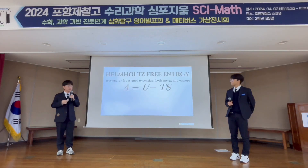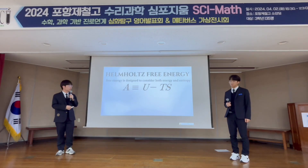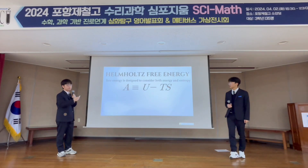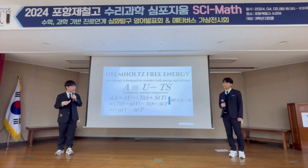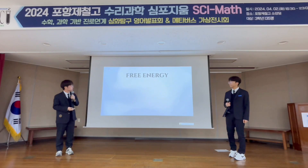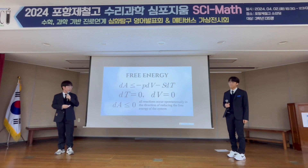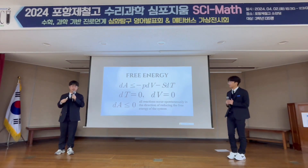To explain this phenomenon more easily, free energy is defined by considering both energy and entropy. The Helmholtz free energy A is defined as A = U − TS, where U is the energy, T is the temperature, and S is the entropy. Differentiating both sides of the equation, since dA is less than zero, it can be seen that all reactions occur spontaneously in the direction of reducing the free energy of the system.